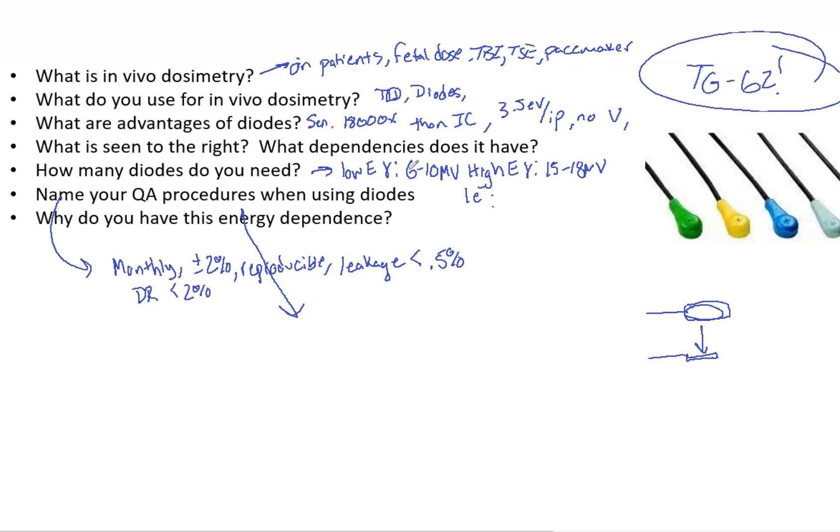So that's diodes in general. And so another thing, they also have SSD dependence, because the dose rate changes with SSD, right? If it's farther away, it is going to have a lower dose rate. And that affects recombination dose rate. There's also a temperature dependence, which is about 0.5% per Celsius degree.